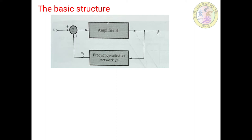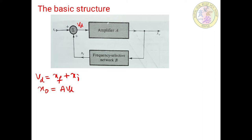Let us derive the relations in this basic structure from the block diagram. Vd is the difference voltage. Vd is nothing but Xf plus Xi, the fed back signal plus the input. The output signal X0 is equal to gain A into Vd, and the feedback signal Xf equals beta into X0.